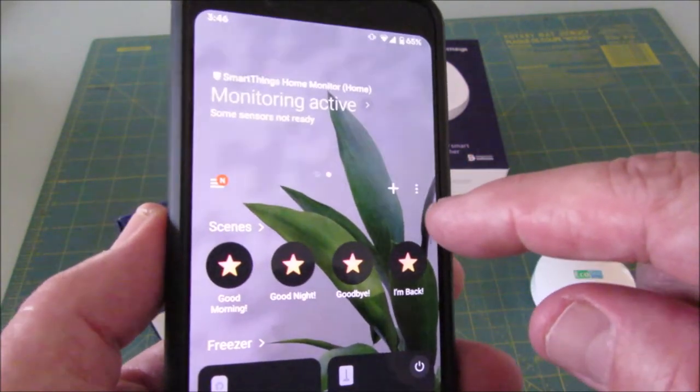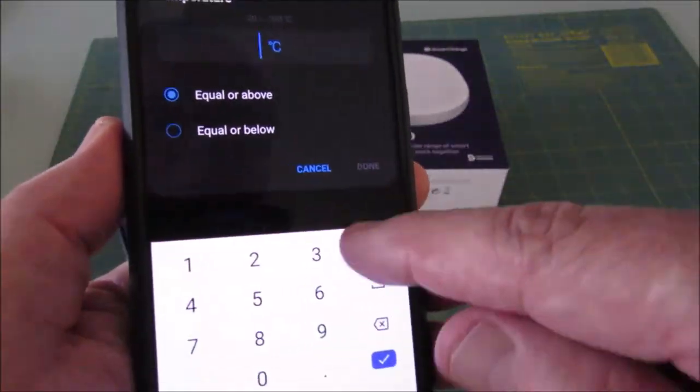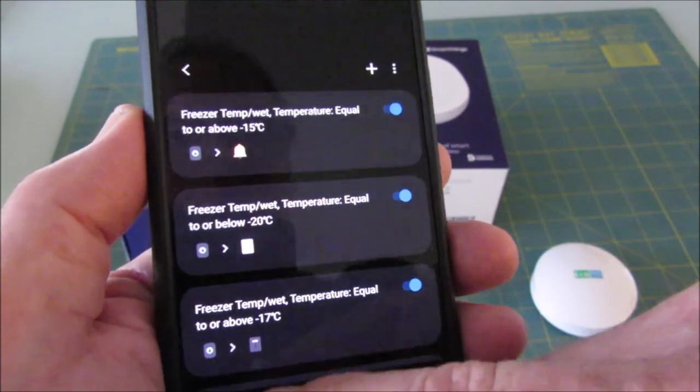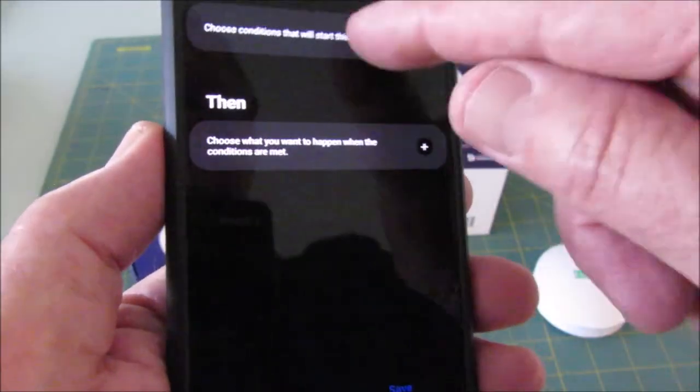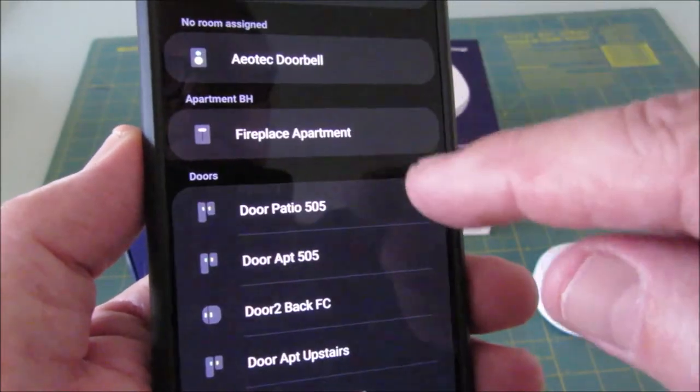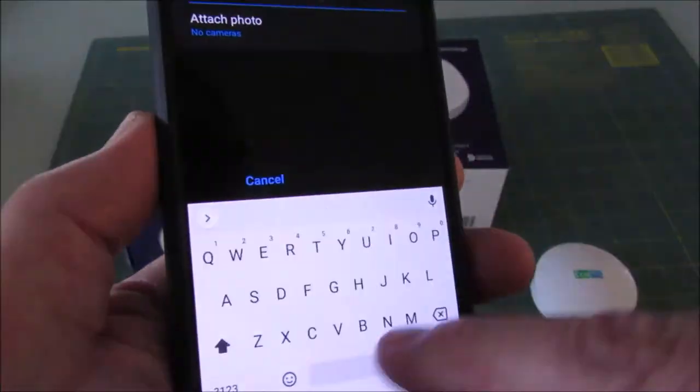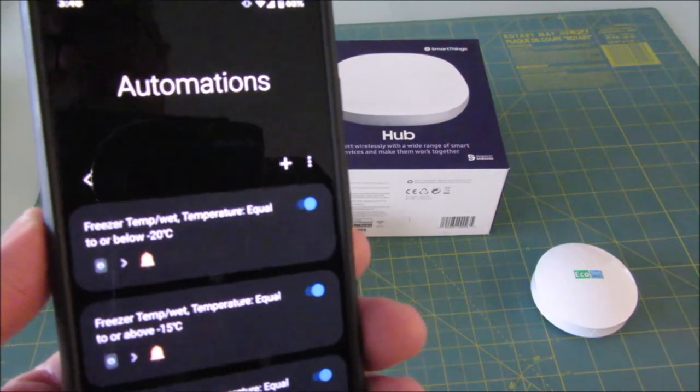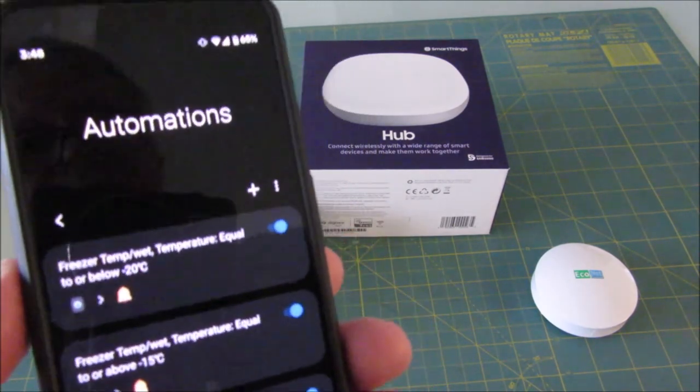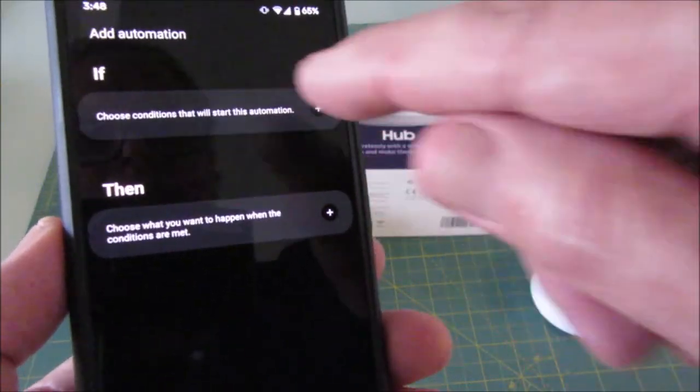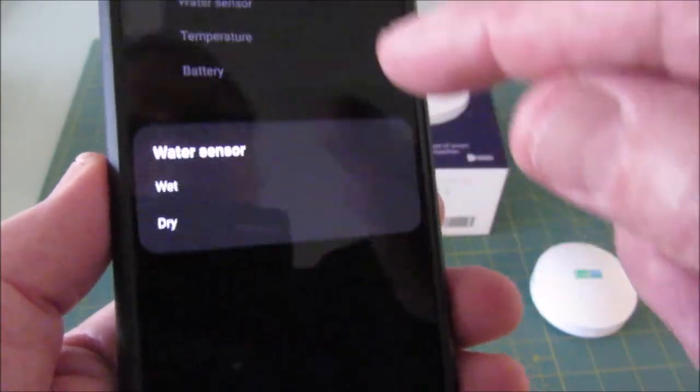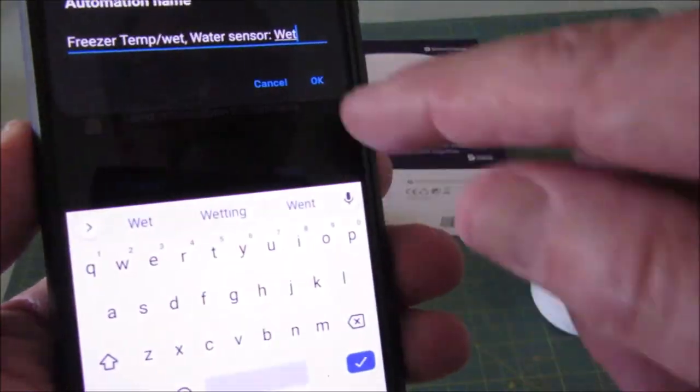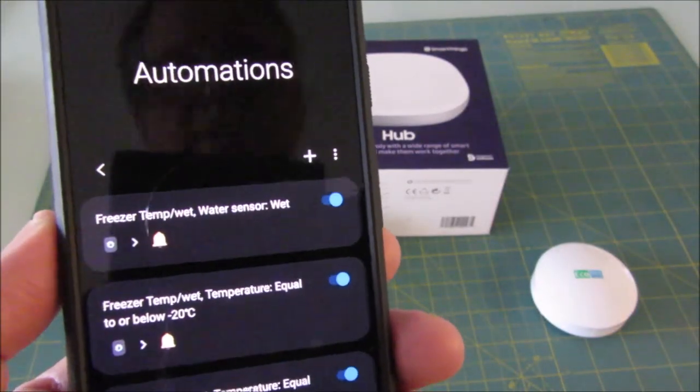Now let's set the notifications for the leak sensor to tell us when it's getting too cold or too warm. All right, so those are the two notifications if it gets too cold or too hot. But as you saw, I've put an ice cube in there so we'll know if that ice cube melts. It'll get the leak sensor wet, so let's put a notification in for that leak sensor. But this time we're going to pick water sensor instead, and we want to know when it's wet. And that's it.